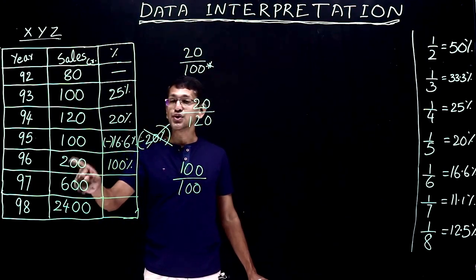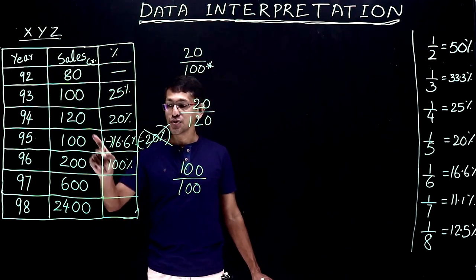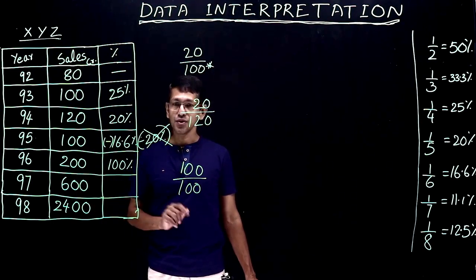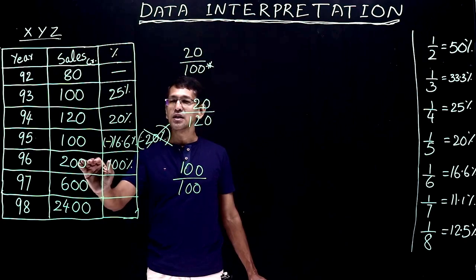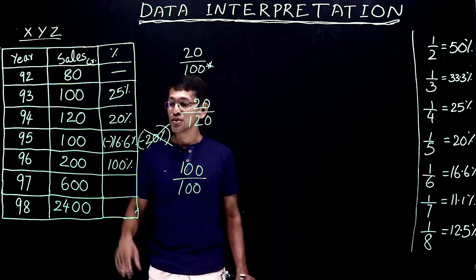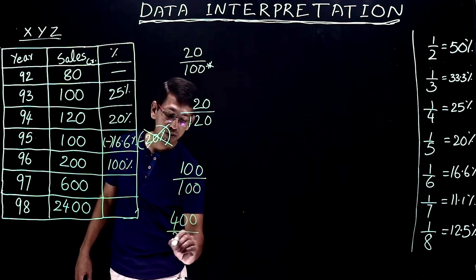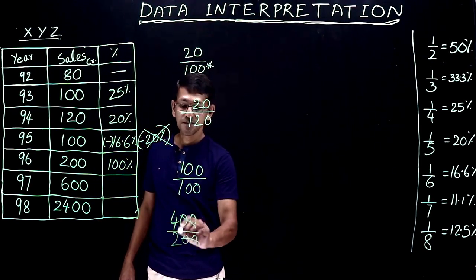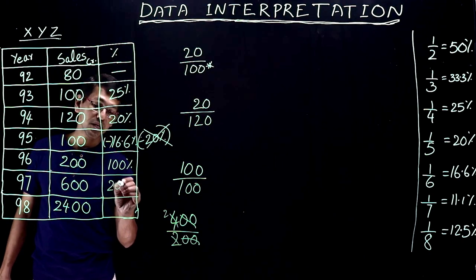From 96 to 97, 200 became 600 — that's 3 times. The actual increase is 400. Divided by the base year figure of 200: 400 by 200 is 4 by 2, which cancels to 2. Multiplied by 100 gives 200 percentage increase.